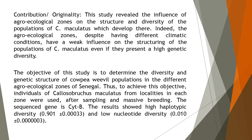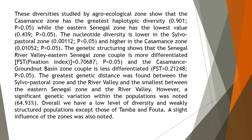The results showed high haplotypic diversity of 0.901 ± 0.00033, and low nucleotide diversity of 0.010 ± 0.00033. These diversities studied by agro-ecological zones show that the Casamance zone has the greatest haplotypic diversity at 0.901 (p < 0.05), while the Eastern Senegal zone has the lowest value at 0.439 (p < 0.05).